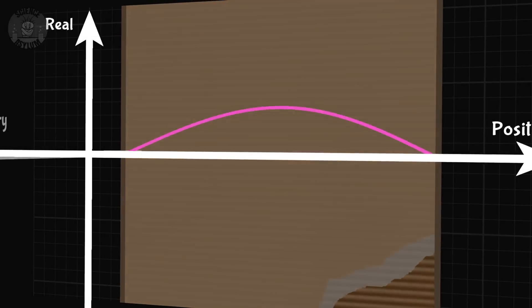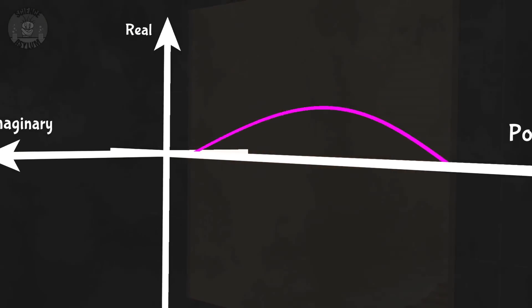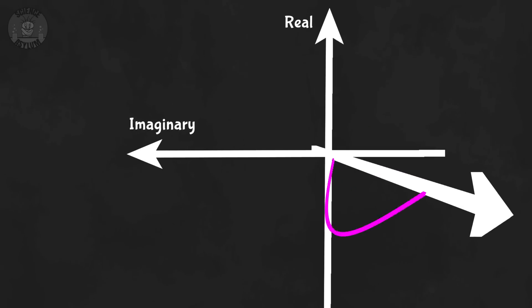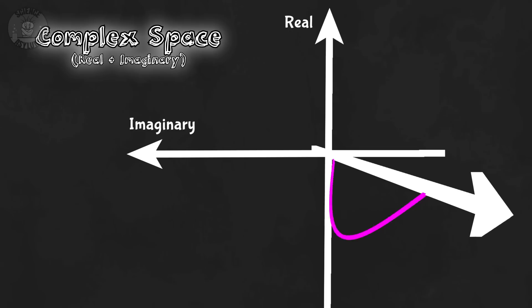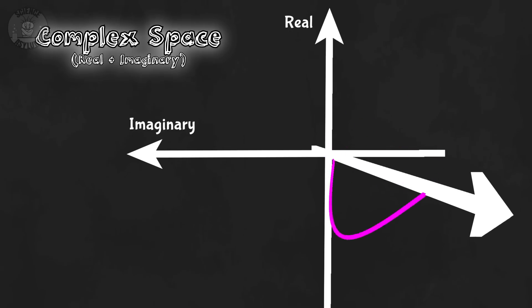To make matters worse, this isn't even really waving up and down. It's actually rotating through both real and imaginary numbers, the combination of which we call complex space. Hence that complex joke from earlier. We don't want things to get too complex. Get it? Complex? Complex? I'm such a dork.